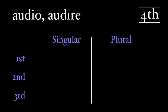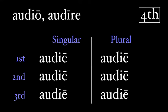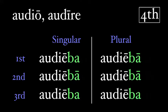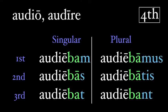The fourth conjugation is the only one that breaks the rules. Fourth conjugation verbs end in a long '-īre' in their present infinitive, like 'audio, audire.' Our stem is going to add a long 'e' at the end, so we have 'audie', then we put our 'ba' infix, then our personal endings: audiebam, audiebas, audiebat, audiebamus, audiebatis, audiebant.